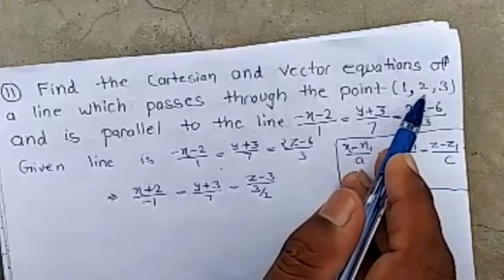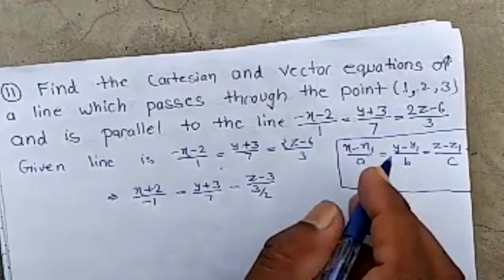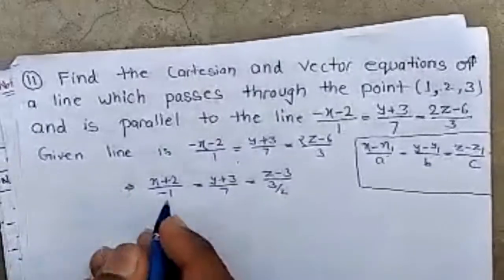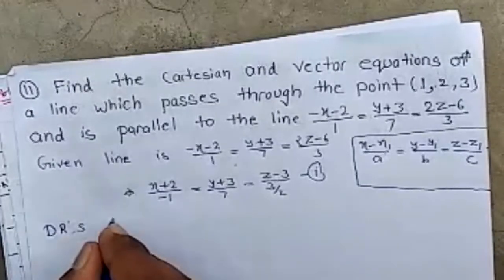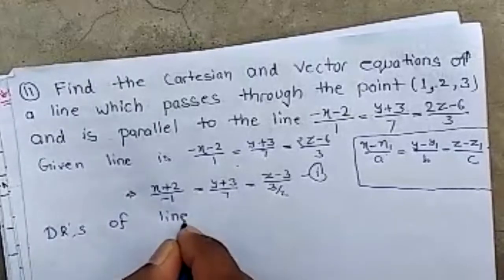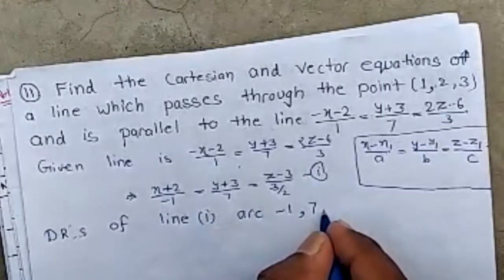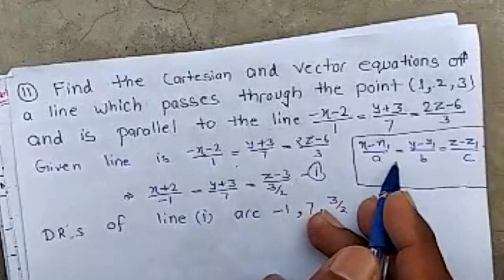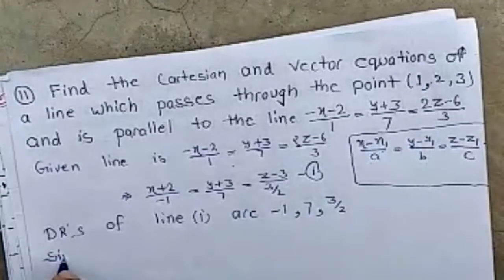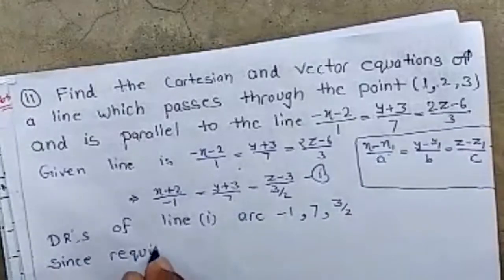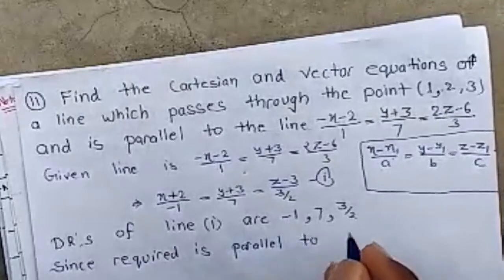Since the required line passes through (1, 2, 3), we have x1, y1, z1 from this point and we need to find a, b, c. The direction ratios of the given line, when written in standard form, are −1, 7, and 3/2. If the equation is in this form, then a, b, c are the direction ratios of the given line.